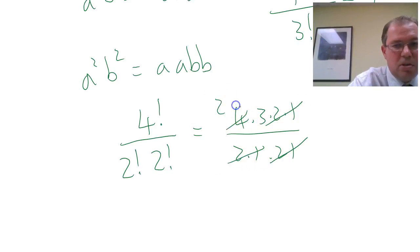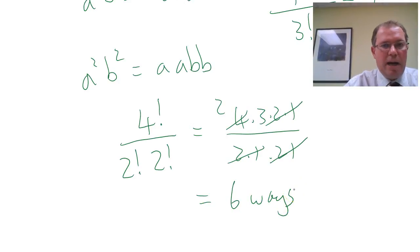This 2 times 1 is a 2, which cancels at the 4 to give me a 2, giving me 2 times 3, and 6 ways. And lo and behold, we've got our answer.